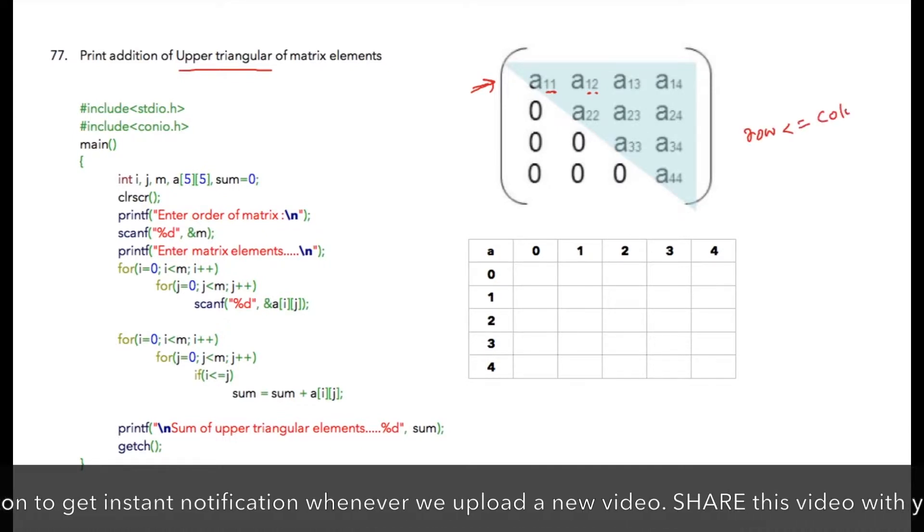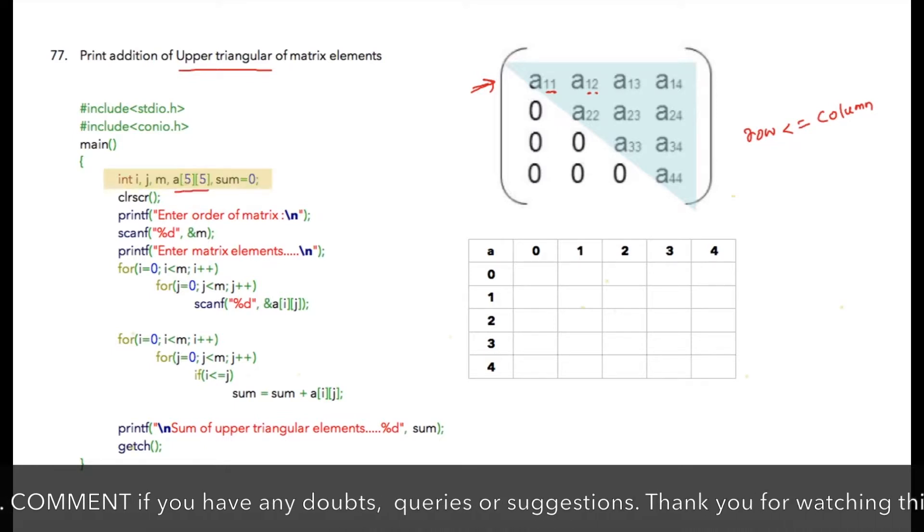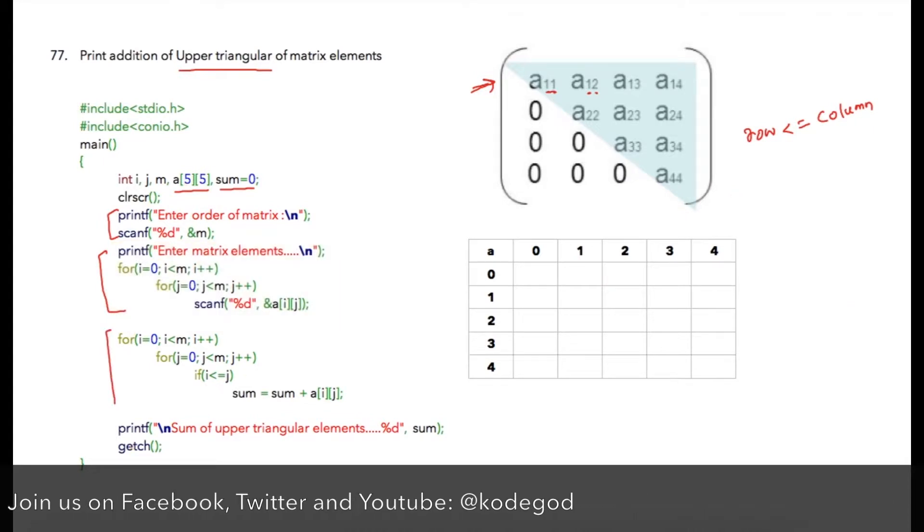Let us see what we have done in the program. We have a 5 by 5 as our square matrix, and we have sum initialized to 0. I'm asking the user to enter m, so those m number of elements will be entered and stored into the matrix.